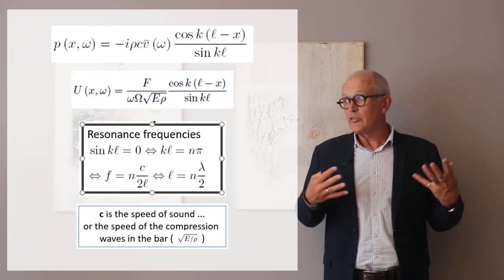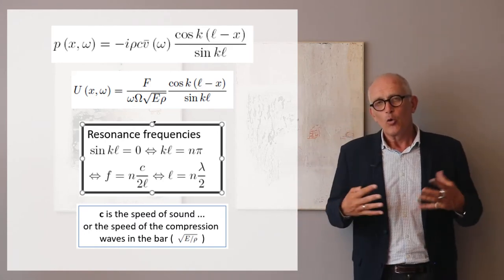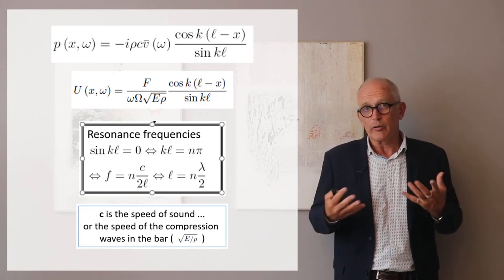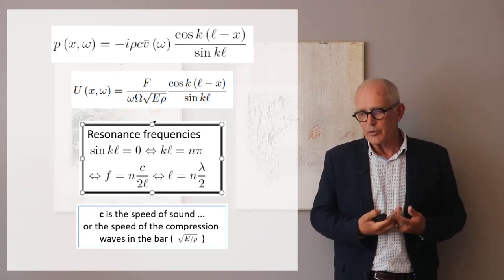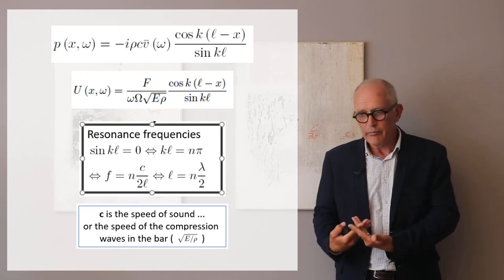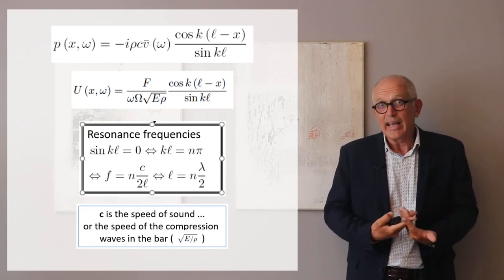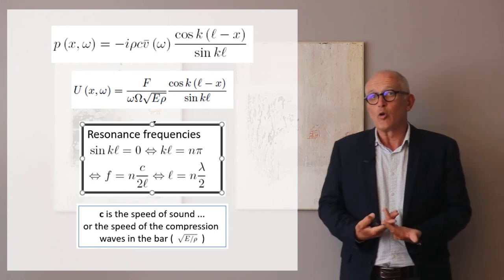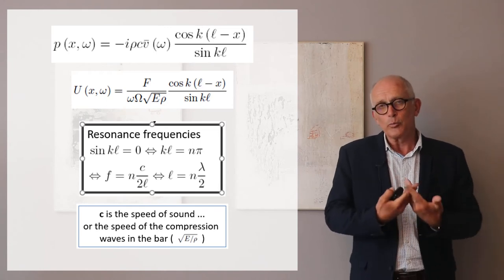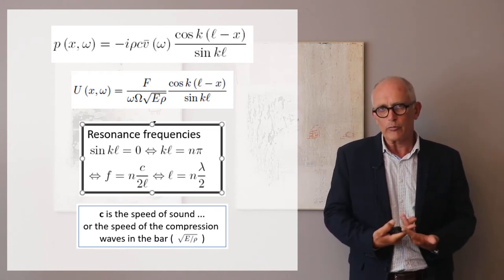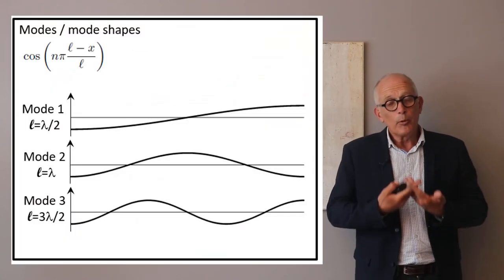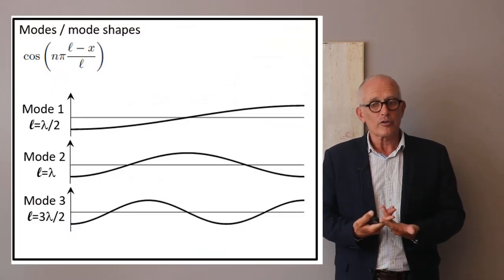These two continuous systems will have an infinite response, so the displacement or pressure are going to infinity if there is no loss. As soon as the frequency has the right value, and N can take any positive or negative value up to infinity, we indeed have an infinite number, a countable infinite number of resonance frequencies in a continuous system.